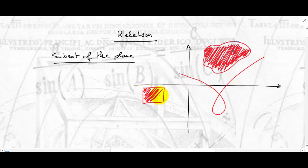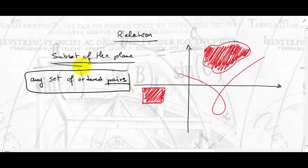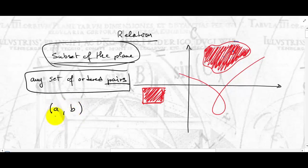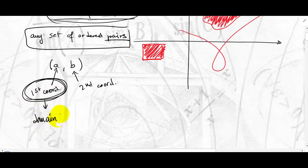Any subset of the plane. A more formal definition would say that a relation is any set of ordered pairs. An ordered pair is an element you can write as (a, b), where a is called the first coordinate and b is called the second coordinate. The set of all the first coordinates in the relation determines what we call the domain of the relation, and the set of all the second coordinates determines what we call the range of the relation.